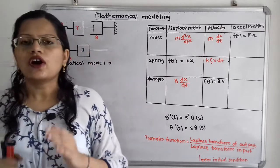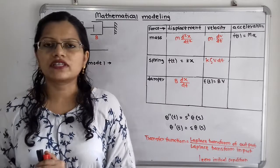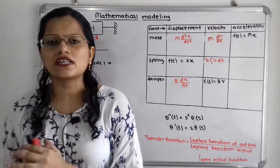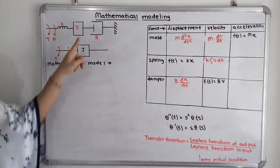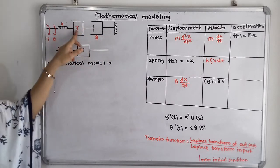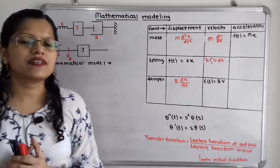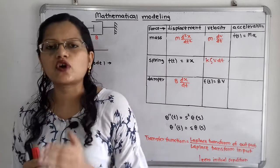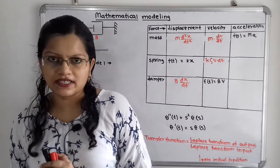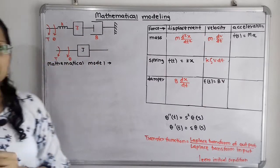We are going to draw the free body diagram as well as write the mathematical model for the rotational system. Let us first understand what is the given rotational system. If we observe here, this is the damper with viscous damping coefficient B, here is the mass with mass moment of inertia J, and spring with stiffness K. In rotational motion, the applied force is the torque T, and in this applied torque T, there is the angular displacement theta — both are in the same direction.